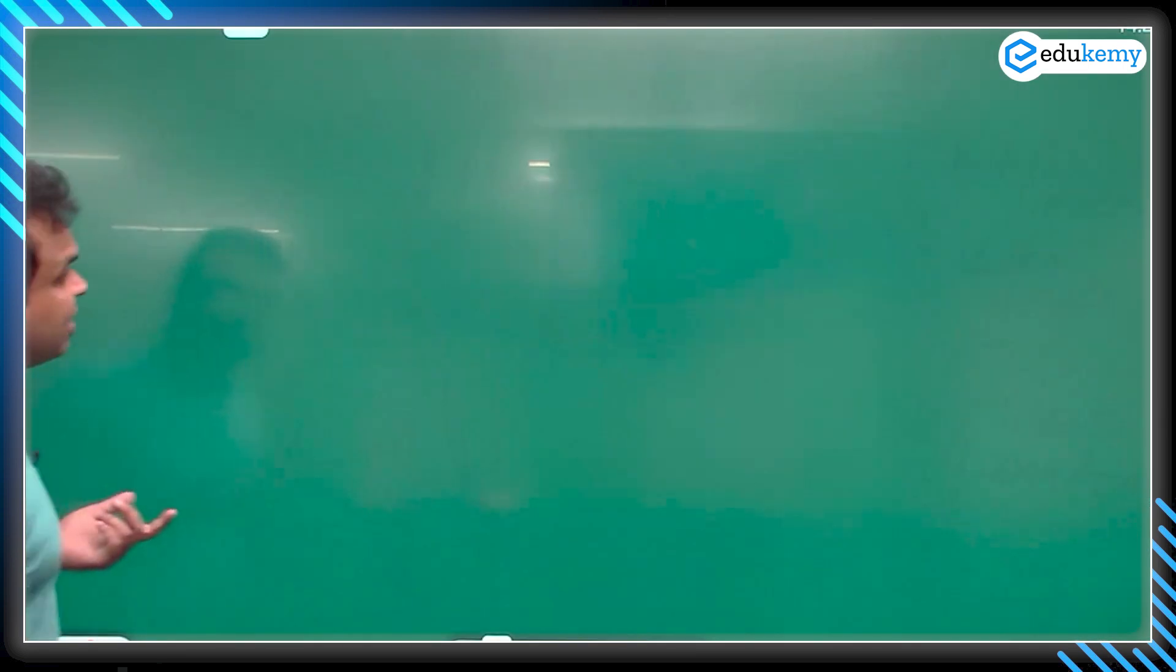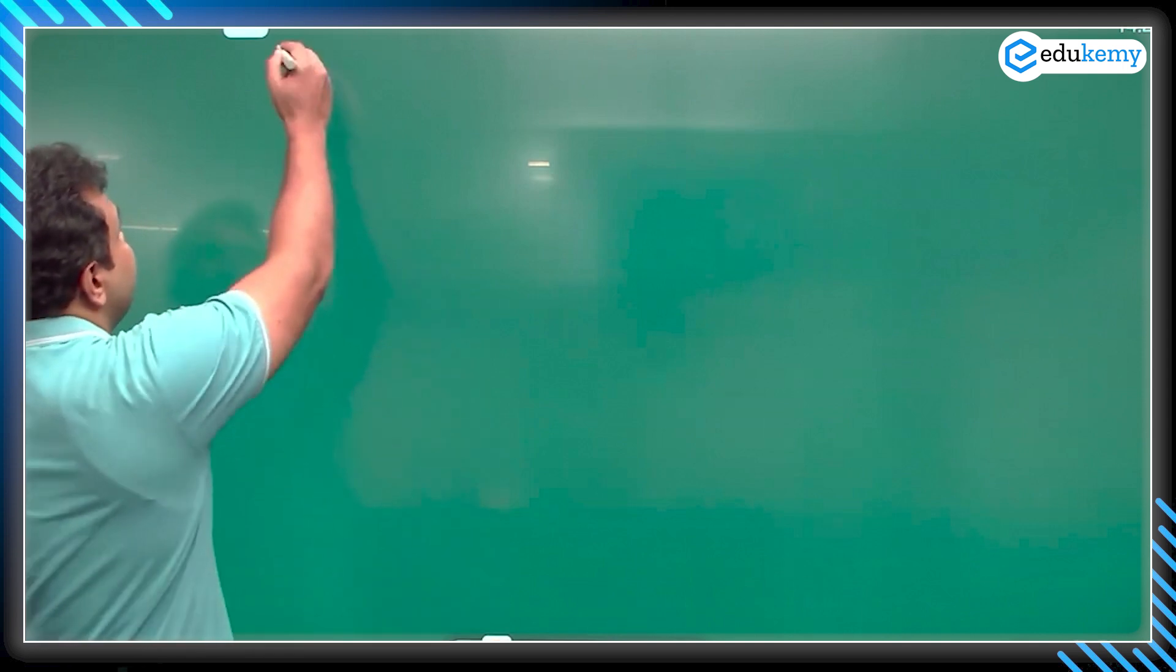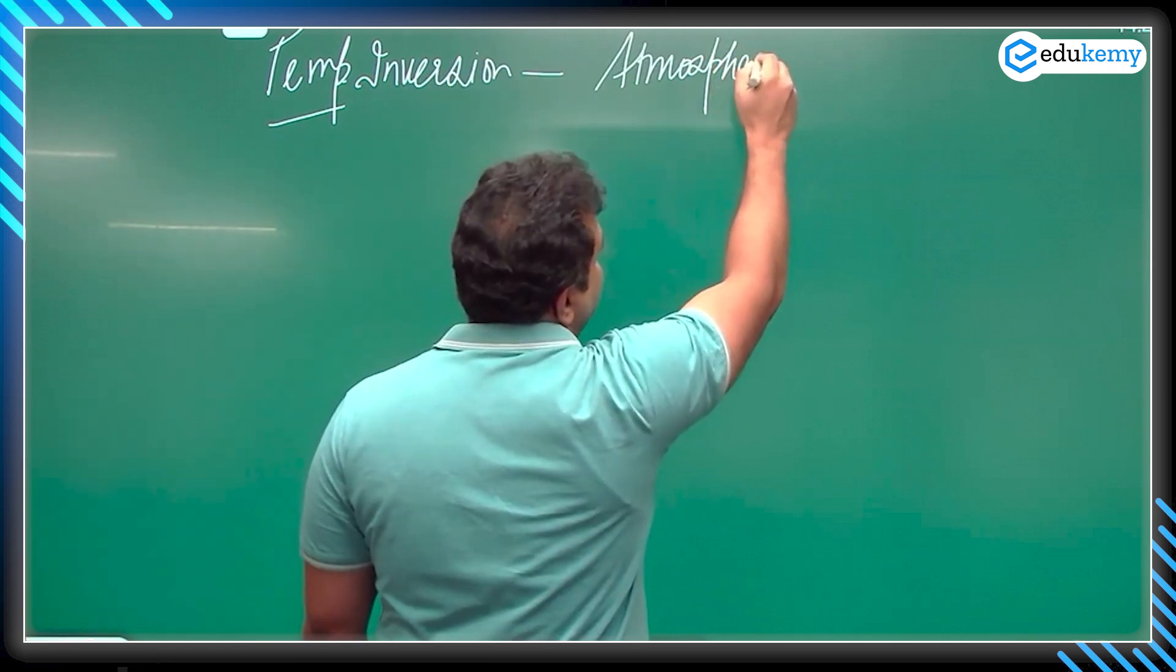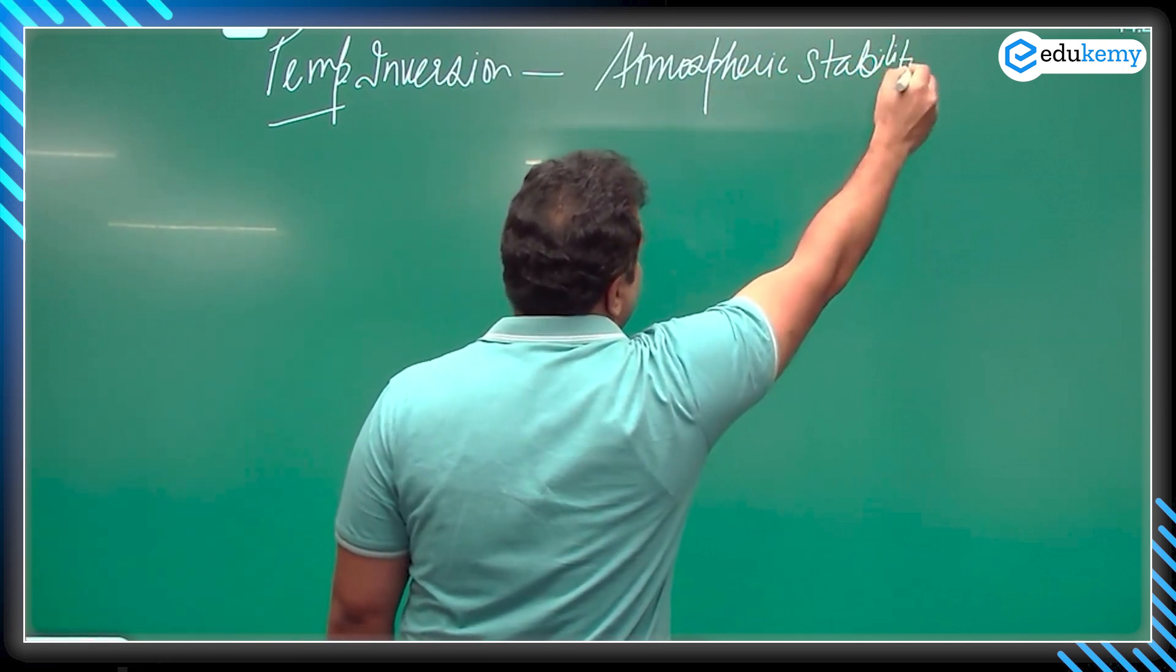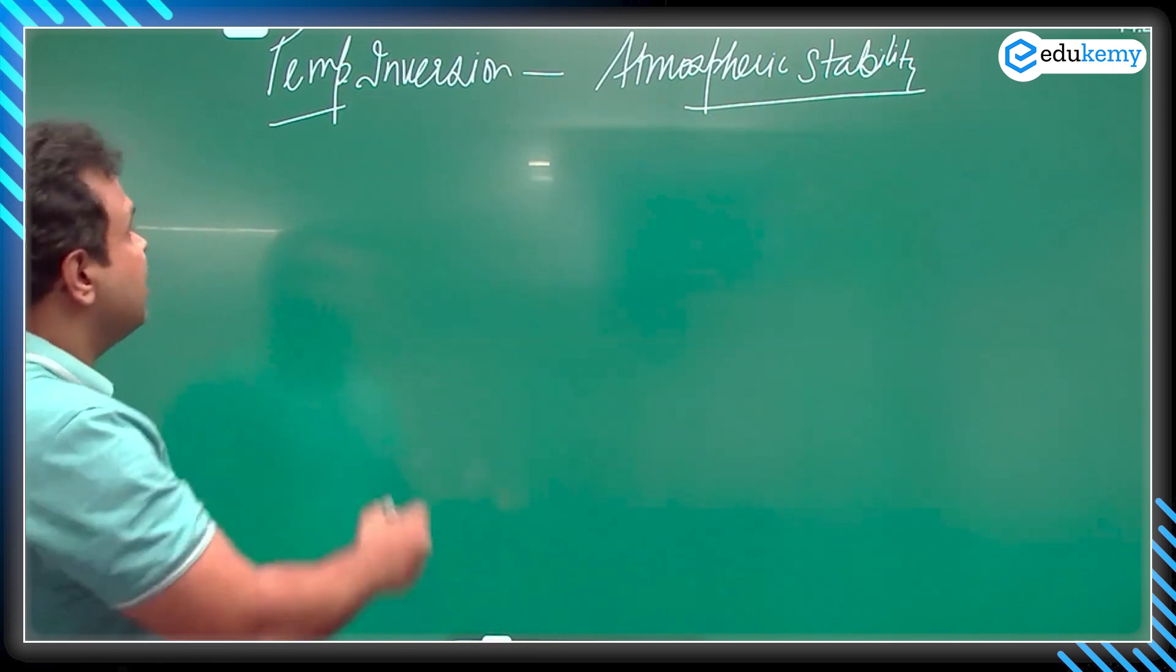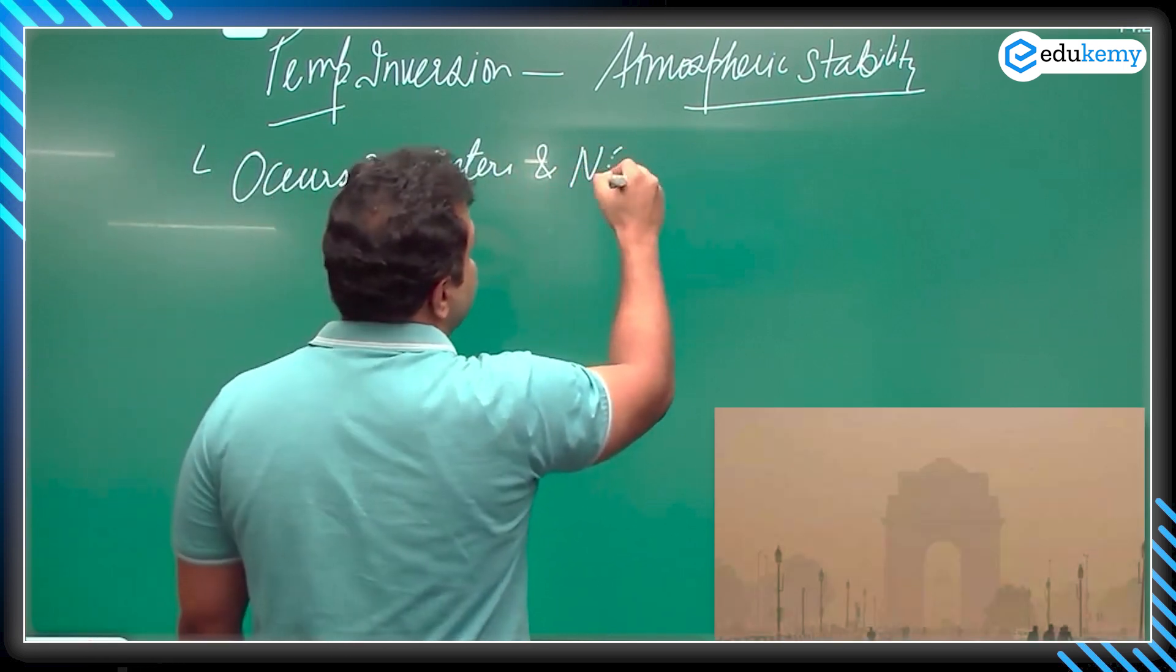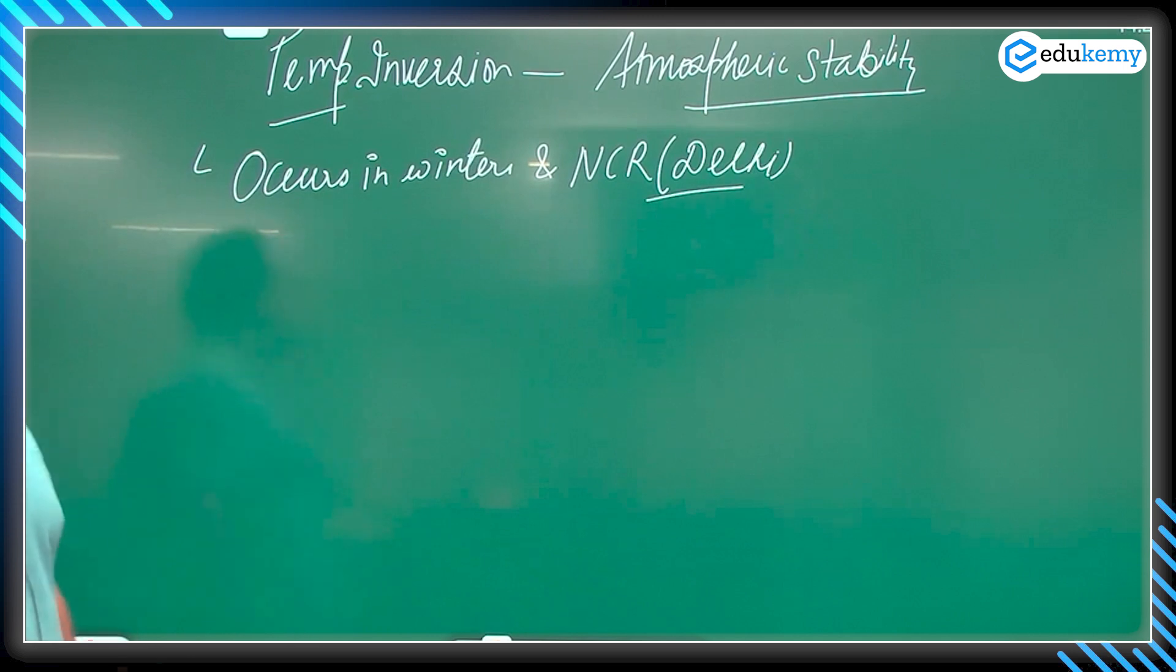This is a case study about temperature inversion. Temperature inversion is related to atmospheric stability, a part of atmospheric stability. This type of inversion we are talking about is surface inversion. This occurs in winters in Delhi and nearby areas. In normal conditions, what happens?